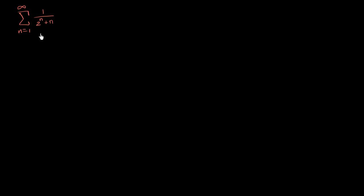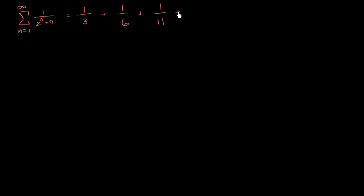In order to get a sense for this series, it never hurts to expand it out a little bit. So this would be equal to: when n equals one, this is one over two to the one plus one, so one over three. When n equals two, it's one over two squared which is four plus two, so one over six. When n equals three, it's one over two to the third which is eight plus three, so one over eleven. When n equals four, two to the fourth is sixteen plus four is twenty, so one over twenty. And we keep going on and on.